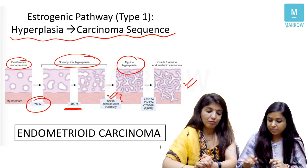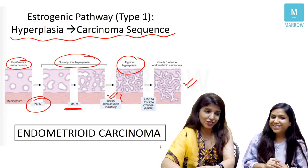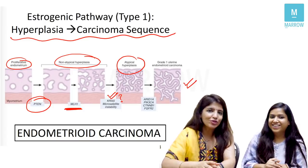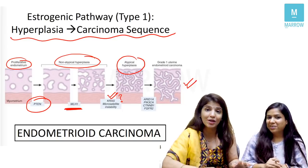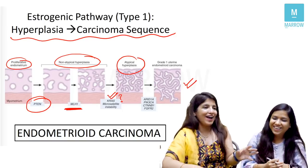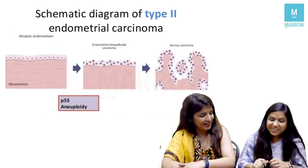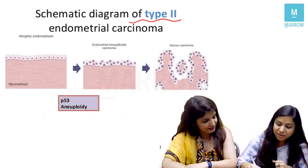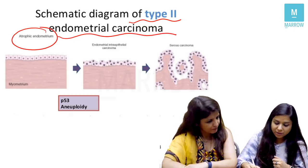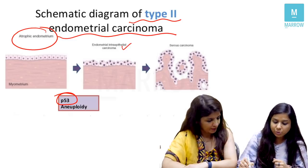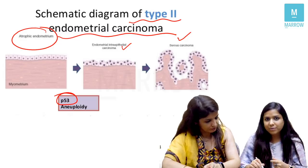A memory aid: PTEN is on chromosome 10 — '10, PTEN, 10, Cowden' helps you remember the association. The genetics of type 1 endometrial cancer progression follows a sequence: proliferative endometrium → PTEN mutation → non-atypical hyperplasia → MLH1 (mismatch repair gene causing microsatellite instability) → KRAS oncogene mutation → atypical hyperplasia → grade 1 endometrioid cancer. This pathway image, analogous to the adenoma-carcinoma sequence for colorectal cancer, can be asked in exams.